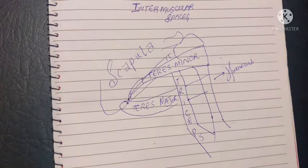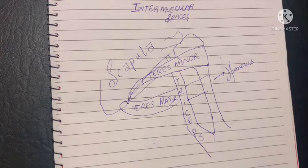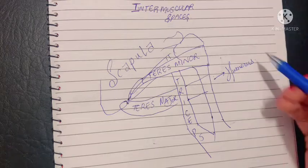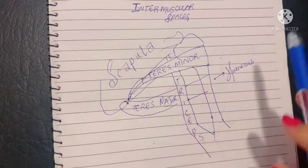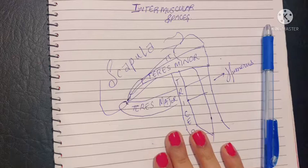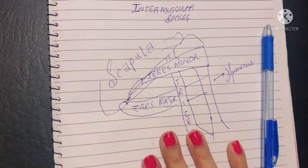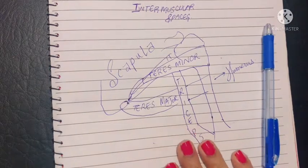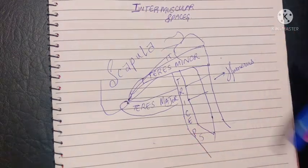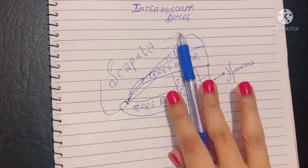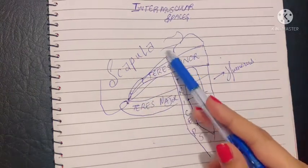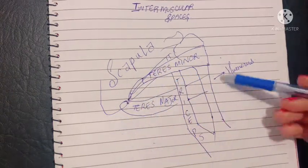Assalamu alaikum, this is Dr. Hasna and today we will be studying about intermuscular spaces of the scapular region. This is a very important diagram and you should have it in your mind when you are about to solve the paper in your exam. It constitutes three spaces that are formed around the scapular region.